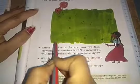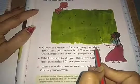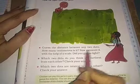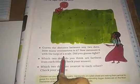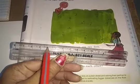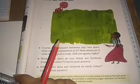Here some dots are given in this picture. The first question is: guess the distance between any two dots. How many centimeters is it? Now measure it with the help of a scale. So we will use our scale, and in our scale, this portion is used for centimeters. Did you guess right?